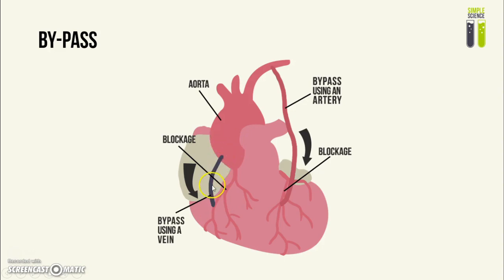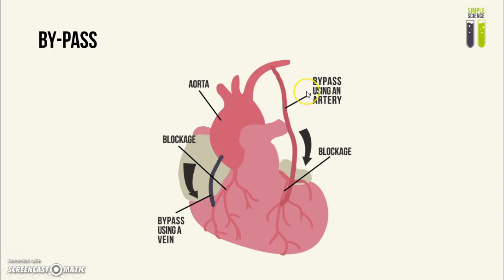That basically allows an alternative route for the blood to flow to the heart tissues instead of having to go through the blocked area. There are two variants: one involves using an artery from another part of the body, and the other involves using a vein from another part of the body.